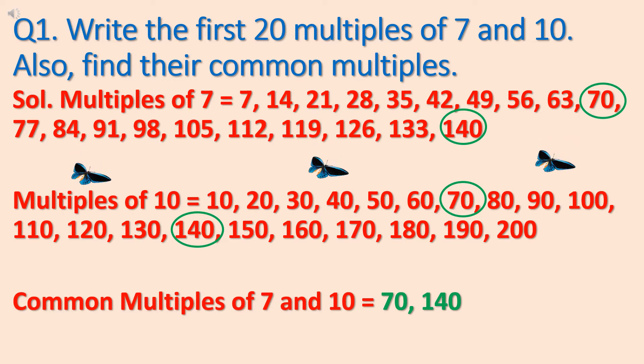Now what we will do next is we will write common multiples of 7 and 10. So first let's circle the common multiples we can find in multiples of 7 and 10. So it is 70 and 140. Only two common multiples are there, 70 and 140.